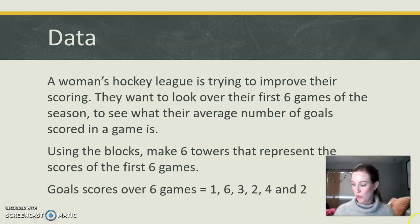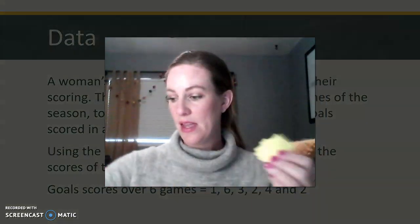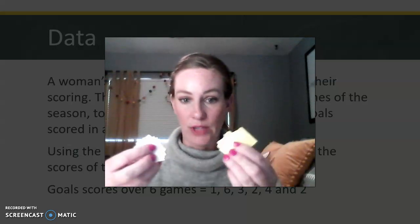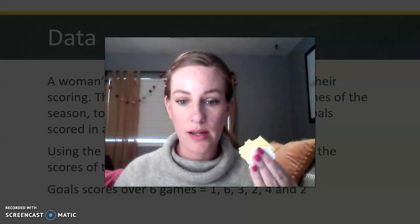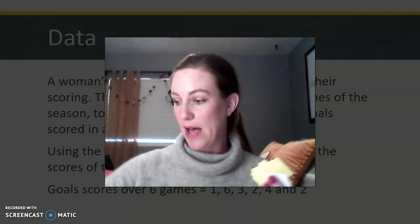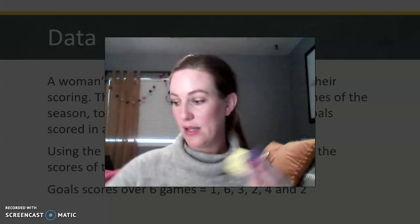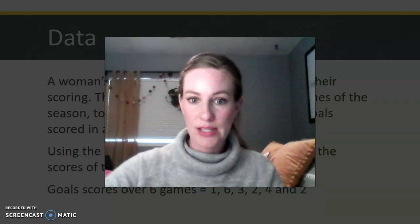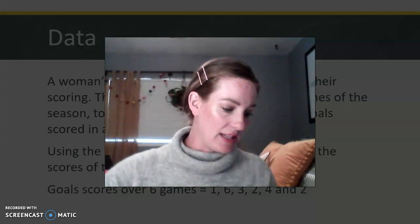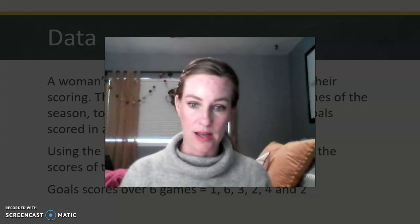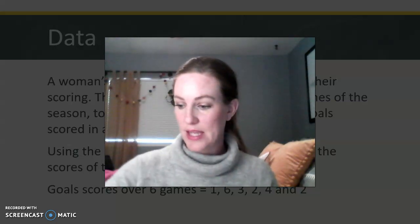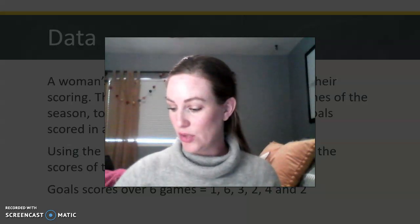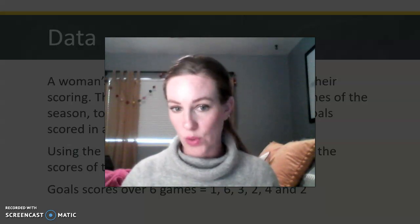I'm going to put you guys together in groups. I have pre-cut some squares for you. Because we have six different games, we need six different colors, and we know there is a maximum of six goals per game. So I have six squares in six different colors for you. Together, I want you guys to collaborate and determine what the average is of their scoring. You need to assemble your squares according to the scores per game.